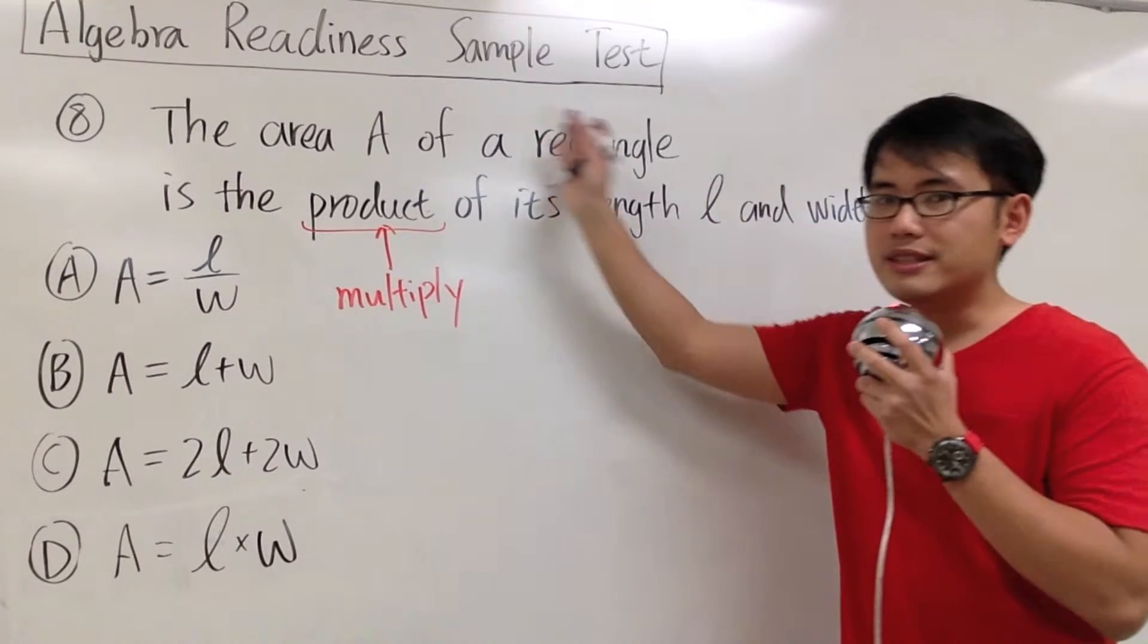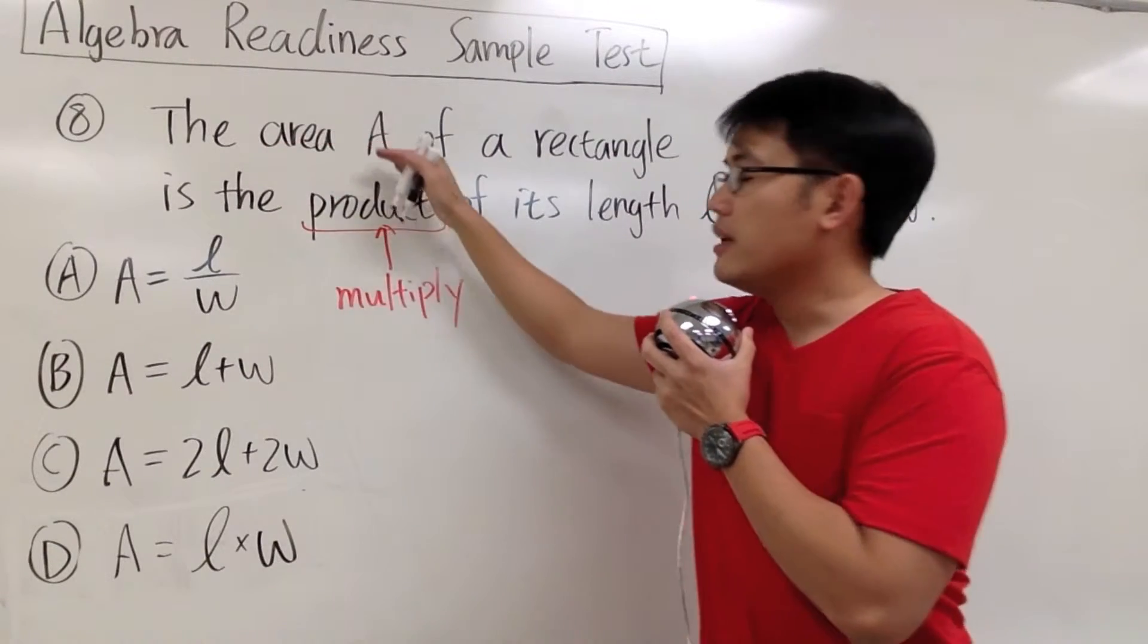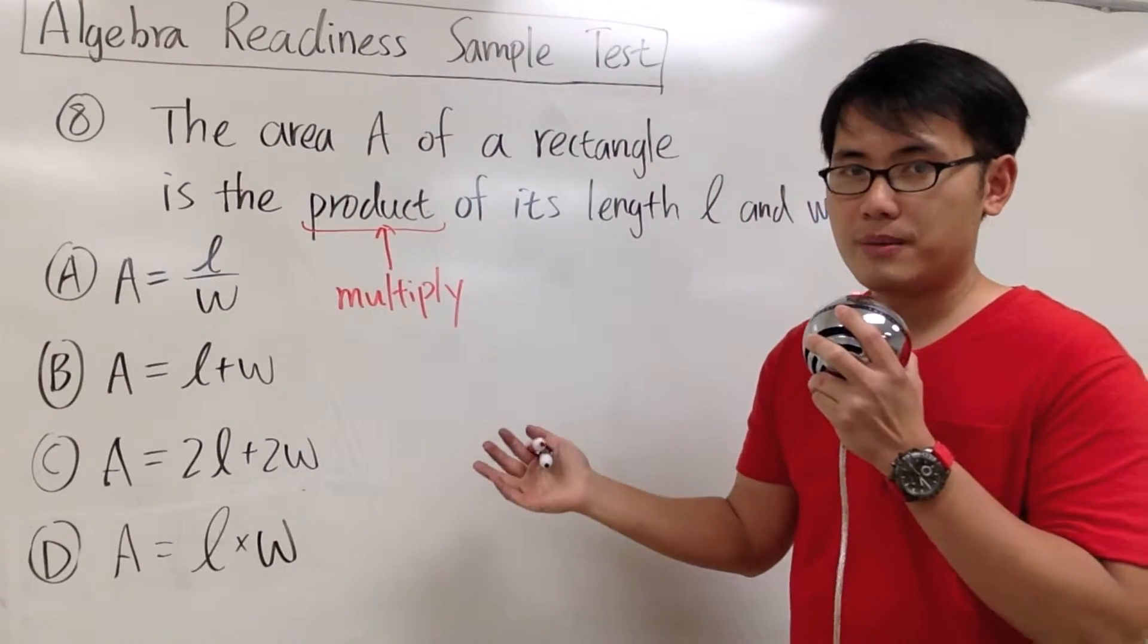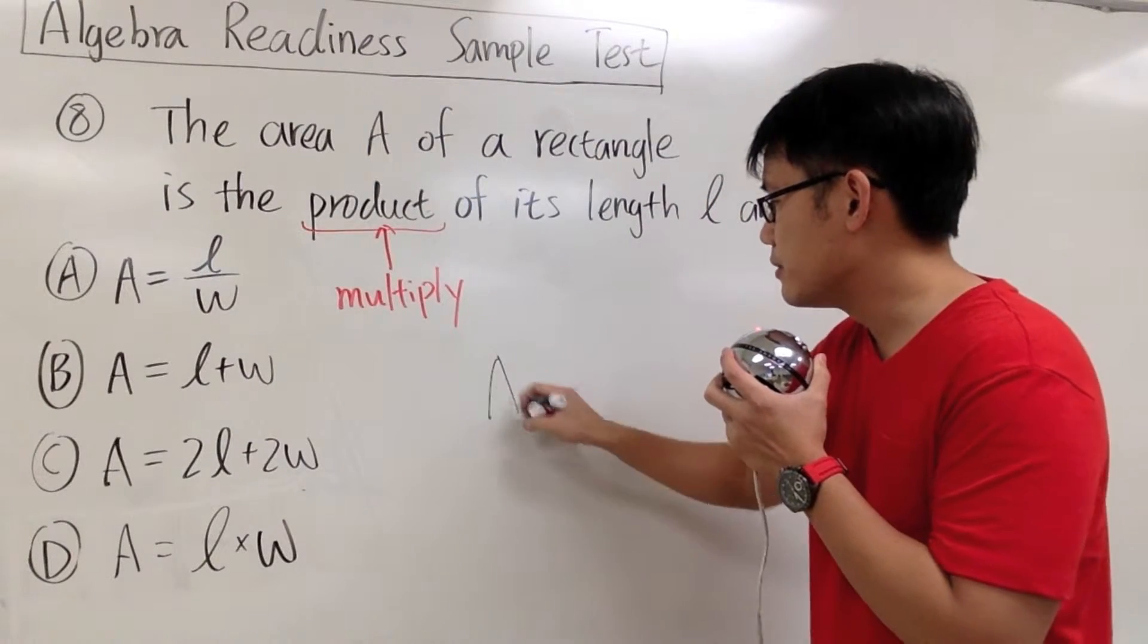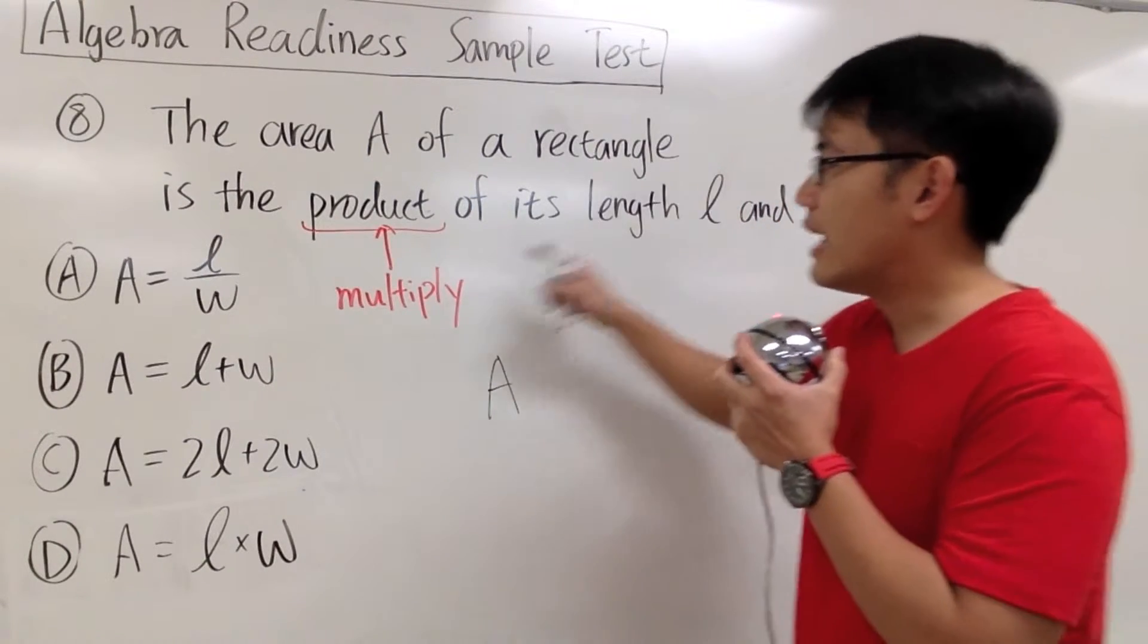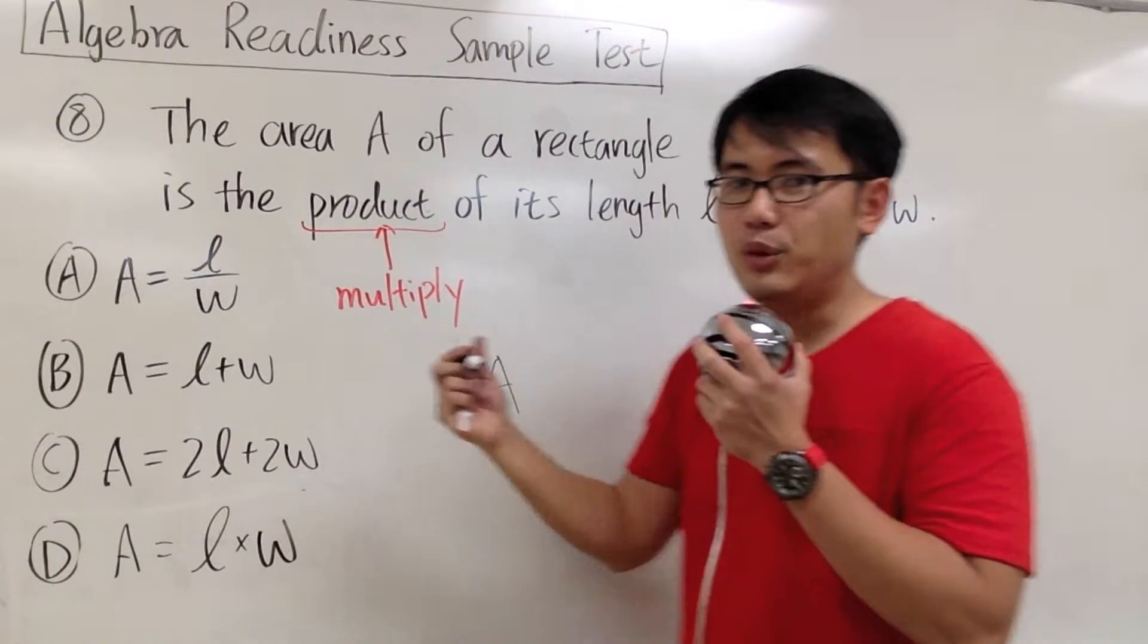And now let's read this over again. It says that the area A, and we will write down the things along the way. A stands for the area of a rectangle. So let me put this down A, and we have the word is, so that's the equal sign.